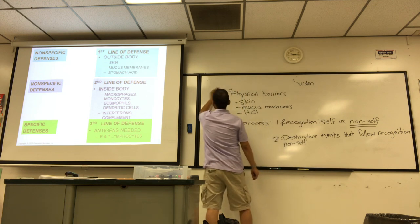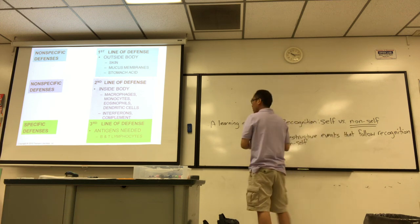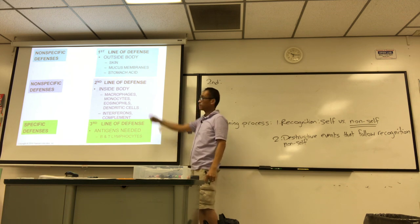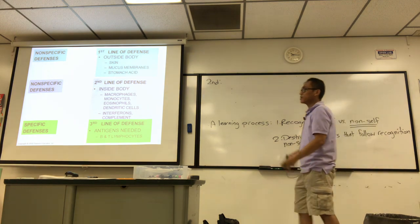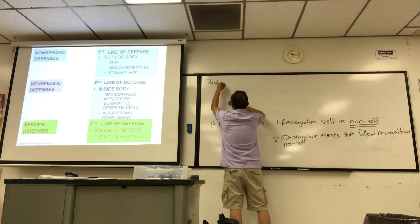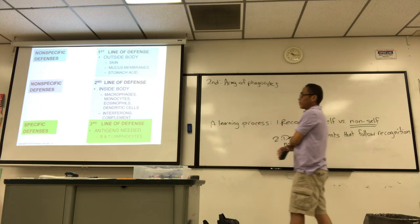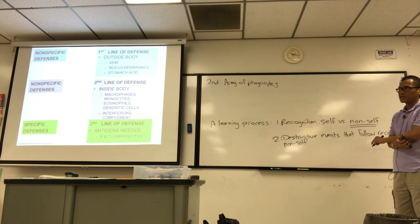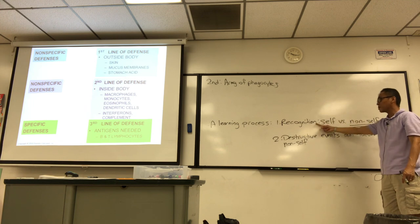So then you have your second line of defense, which is also considered non-specific, able to recognize self and anything non-self. Basically, these are your army of phagocytes circulating inside your body. If the thing manages to get past the first line, gets past the skin, maybe you have a cut and something enters into the bloodstream, now it's in you. Now you have army of phagocytes.